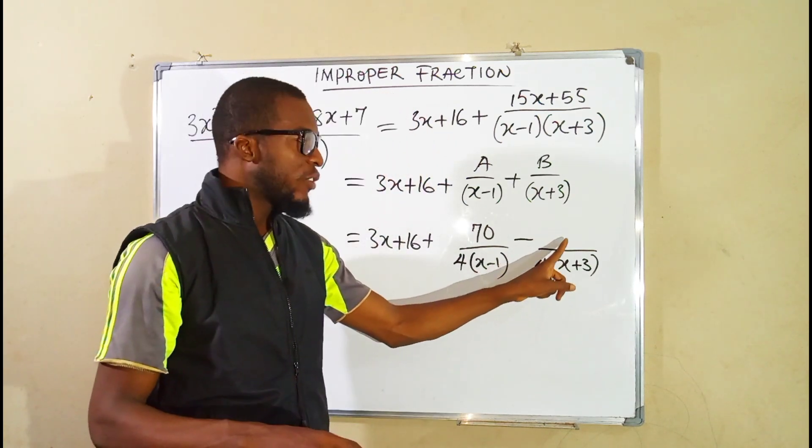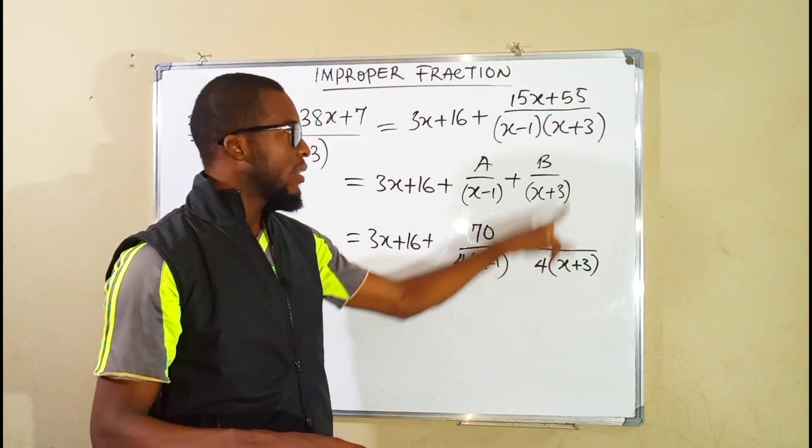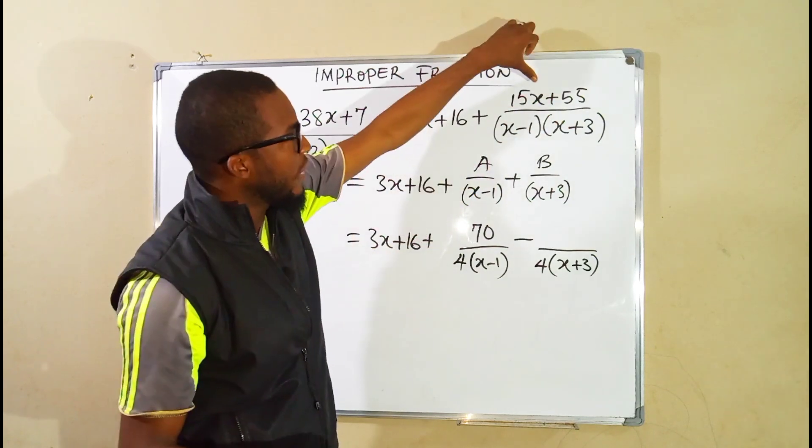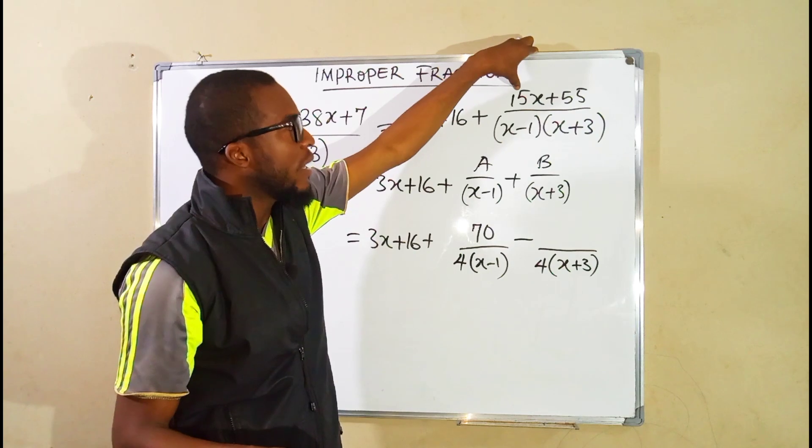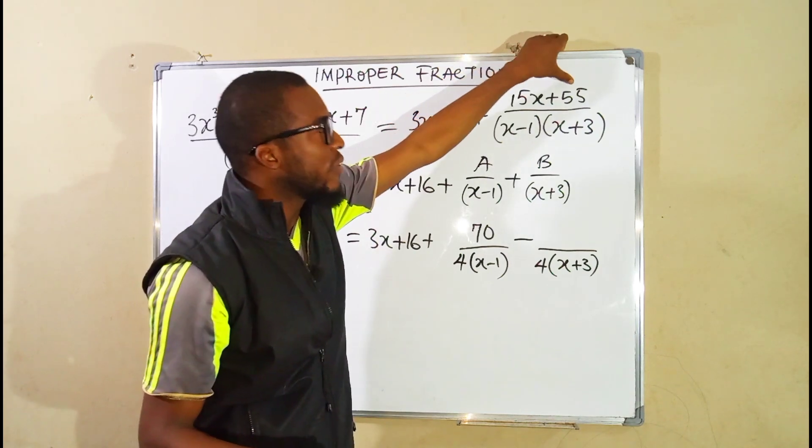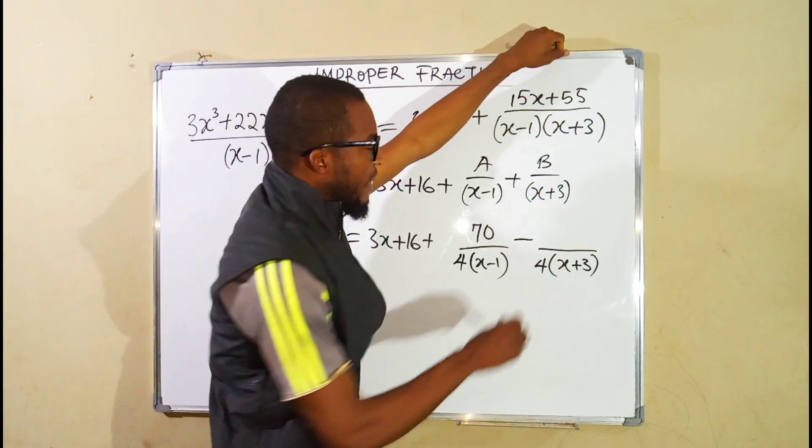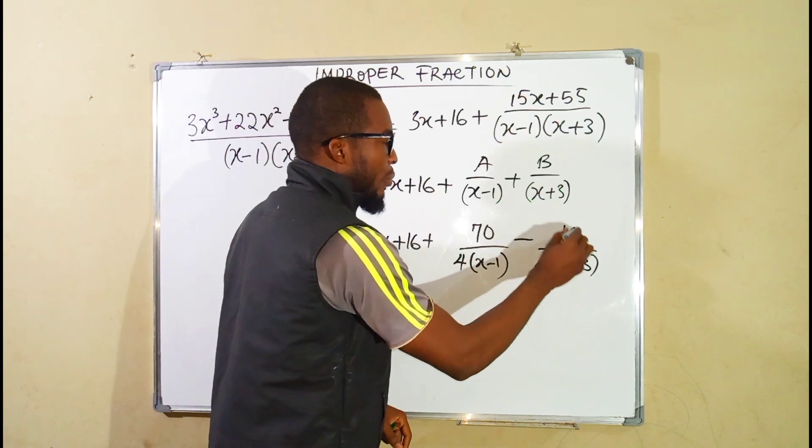To obtain its numerator we are going to substitute that negative 3 in here. So negative 3 times 15 is negative 45. And negative 45 plus positive 55 is 10. So we have 10 to the top.